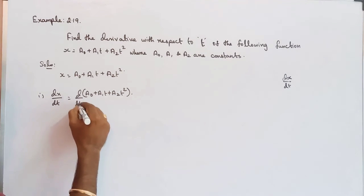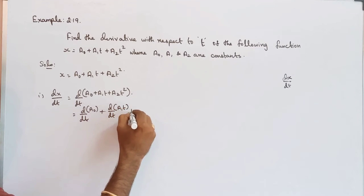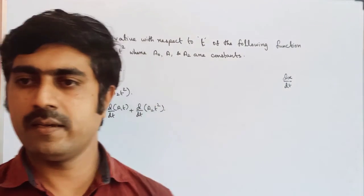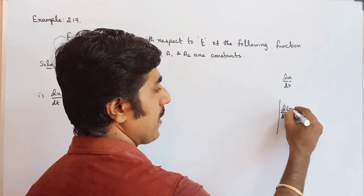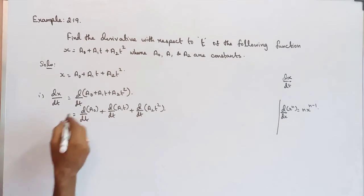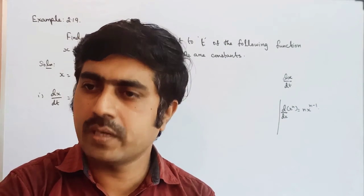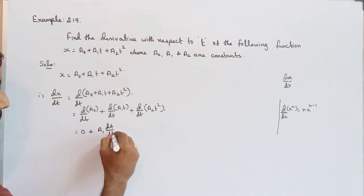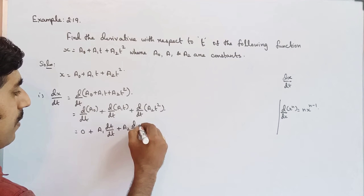d by dt is common for all terms, so we split it: d by dt of a0, plus d by dt of a1t, plus d by dt of a2t squared. We follow the formula d by dx of x to the n equals n times x to the n minus 1. So all of the constant part — differentiating a constant gives 0 — plus constant a1 into dt by dt, plus a2 constant times d by dt of t squared.